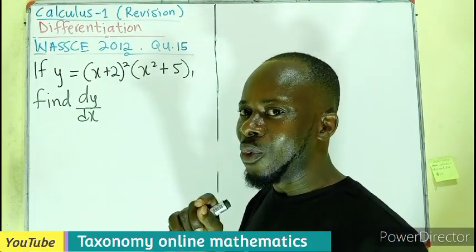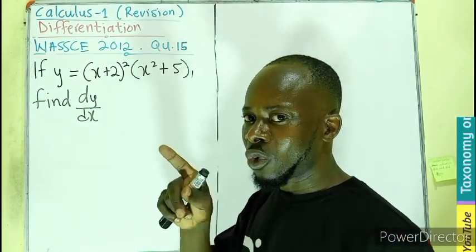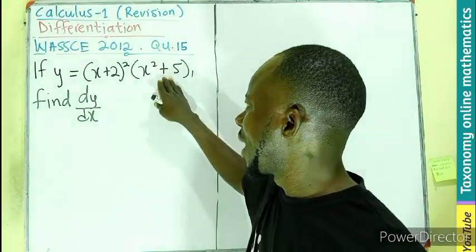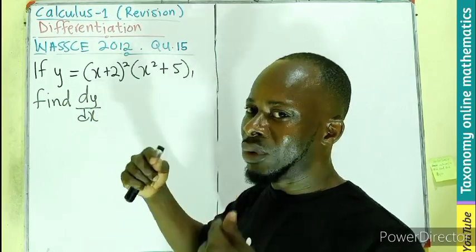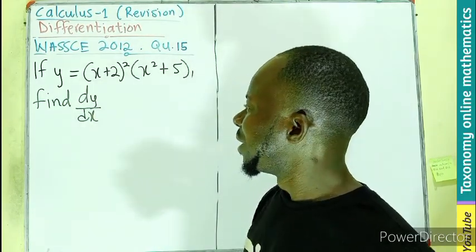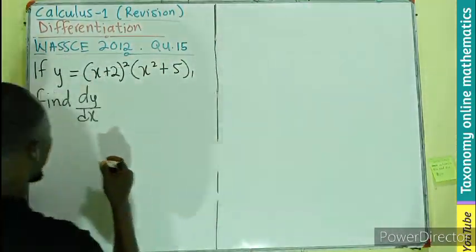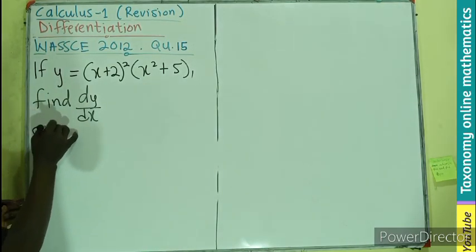If y is equal to (x+2)² multiplied by (x²+5) in one bracket, we have to find dy/dx. We have to differentiate this with respect to x. So let's see how we can go about this.